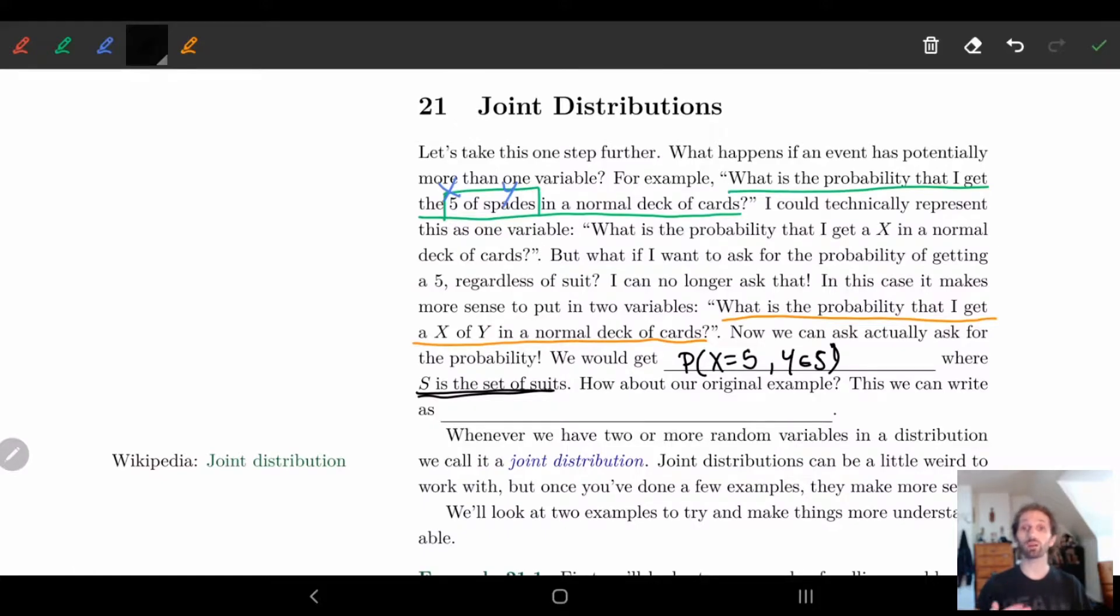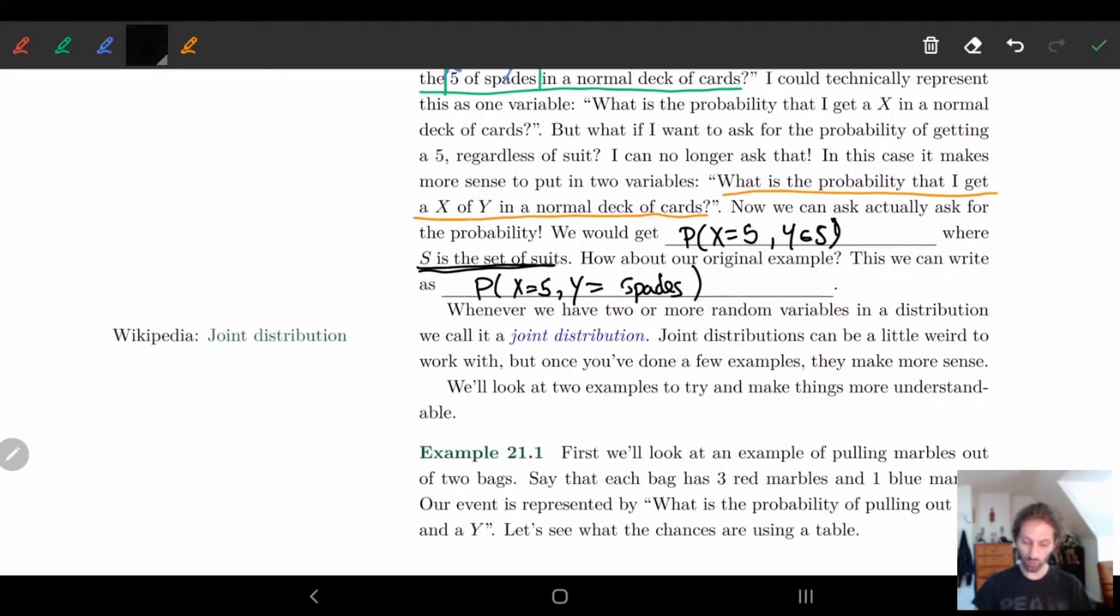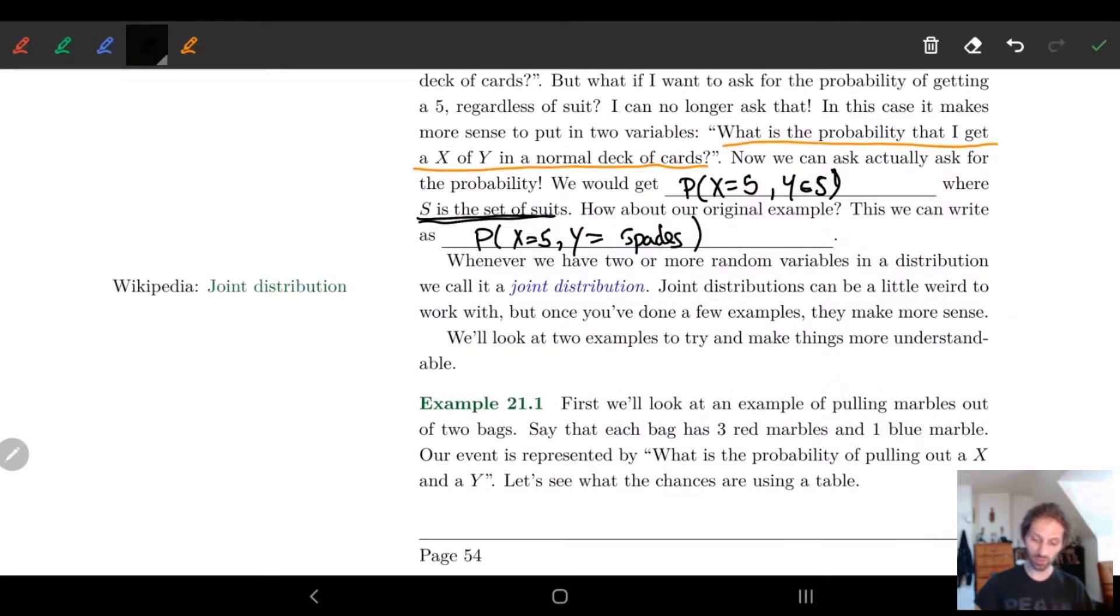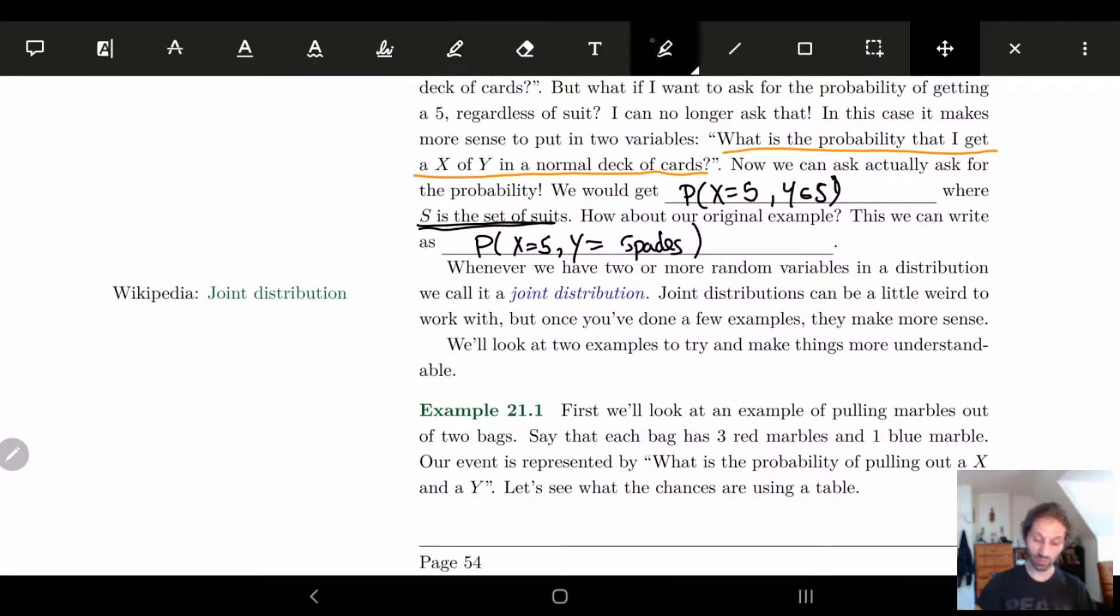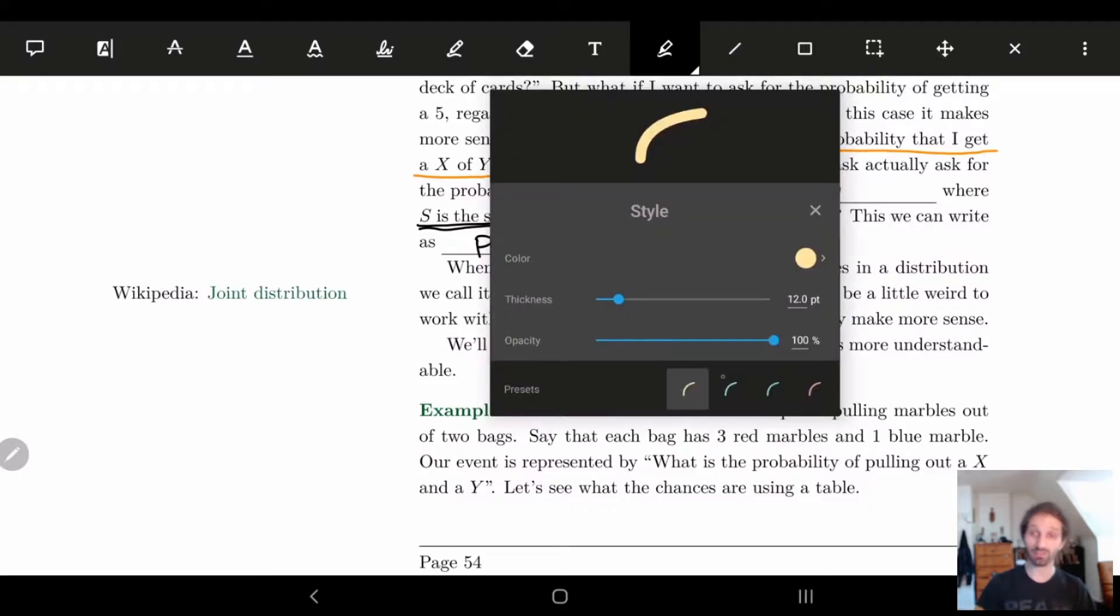Say I want to look at the number five itself, how often will I get a five irregardless of suit? In this case I would say let x be equal to five and y we're just going to make the s where s is a set of suits. And so we can represent this thing using more than one variable. Whenever we have two or more random variables in a distribution, what we're going to call this is a joint distribution because they're kind of combined.